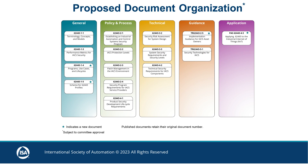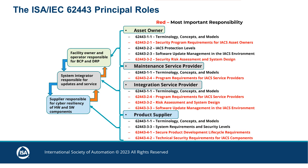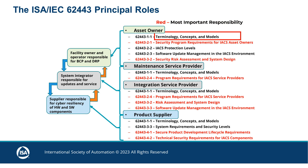This slide shows the proposed organization for the ISA/IEC 62443 documents. This diagram summarizes how documents in the series are aligned with principal roles. These alignments are neither unique nor exact. Some documents in the series contain information of interest to more than one principal role. For example, the terminology, concepts, and models described in 62443-1-1 are applicable to all roles.